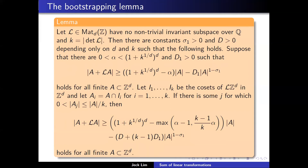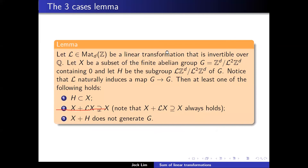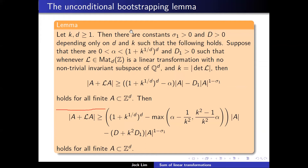The important difference between the old bootstrapping lemma and this one: in the old lemma we need the condition that there is some j satisfying a certain inequality. For the unconditional bootstrapping, we don't need that condition—although the improvement in the bound is slightly smaller.